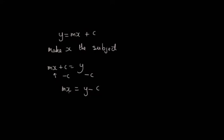And similarly, like the last one, we've now got the x here. We want to get rid of this m. So if we divide both sides by m, so let's divide this side by m and divide this side by m, we're going to have x equals y minus c over m. And that's now x is the subject.